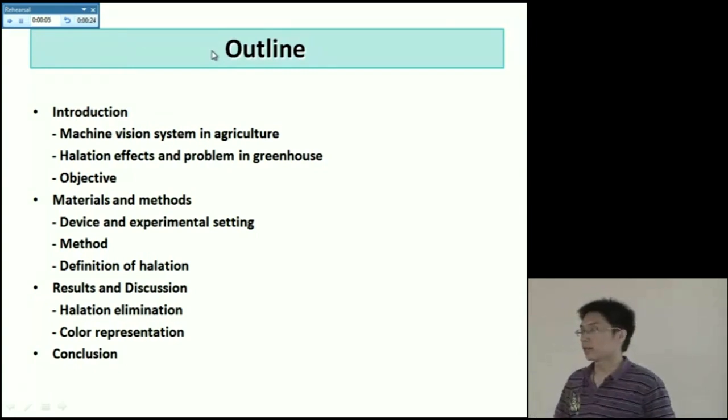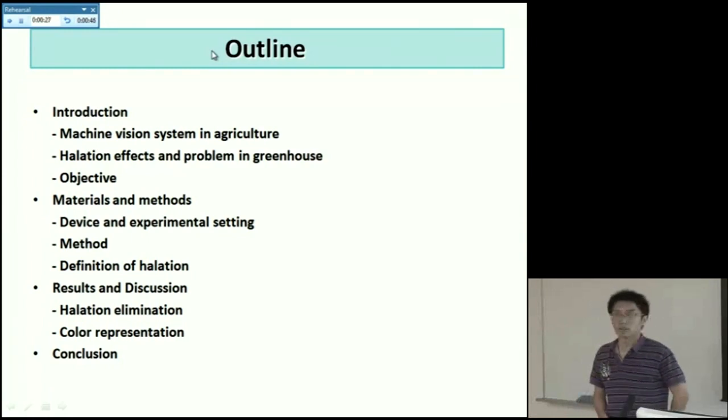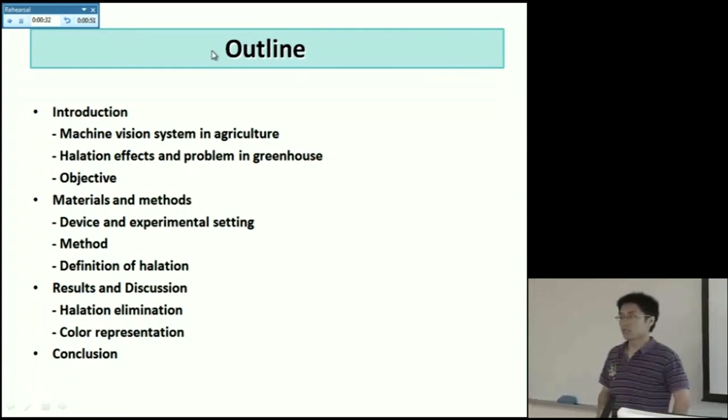In the introduction part, I will talk about the machine vision system in agriculture and also halation effects and its problem in greenhouse and the objective of my research. Next, in materials and methods, I will talk about the device and experimental setting and the method and also definition of halation in my research. Thirdly, I will talk about the results and discussion, about halation elimination effect and also the color representation improvement. Finally, I will make a conclusion.